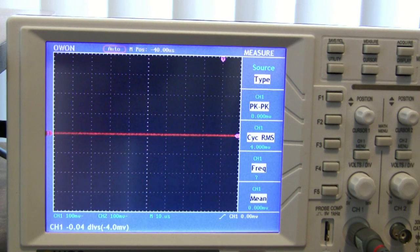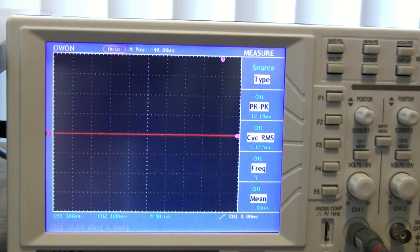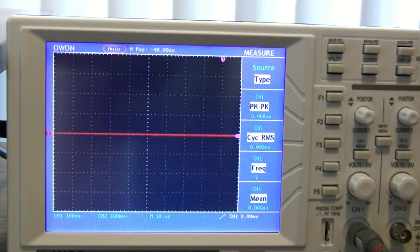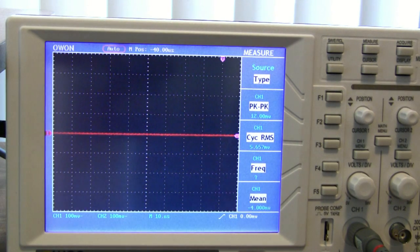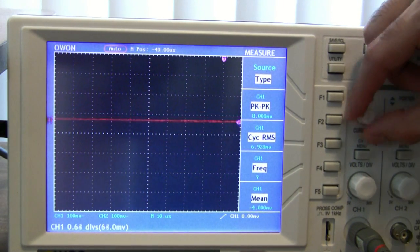Now remember the final type of coupling I talked about? Ground coupling? That basically just means that you aren't measuring anything at all. You're just measuring ground. In other words, it's kind of a useless setting and the only time you ever use it is when you want to reposition your waveform to represent zero volts right in the middle of the screen.